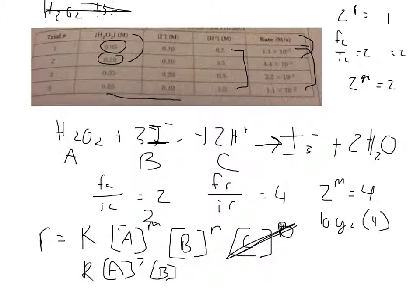So literally, your rate equals K times A squared times B. So this reaction is second order with respect to A and first order with respect to B.